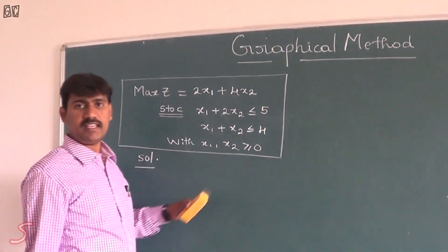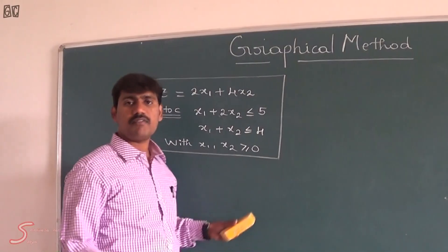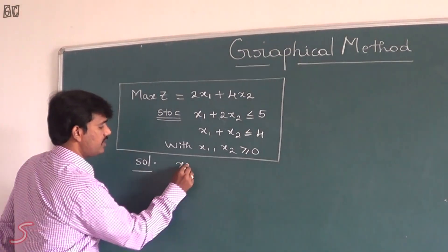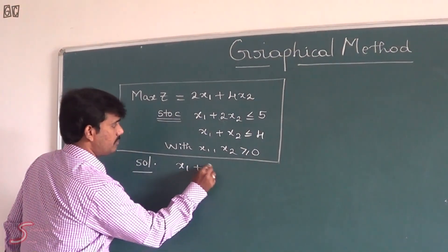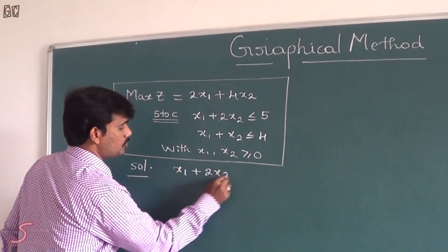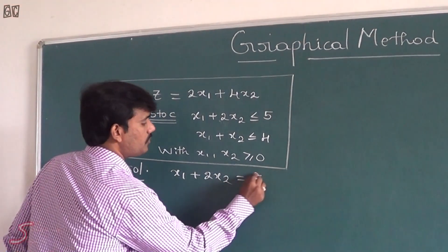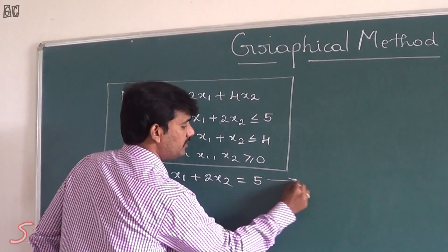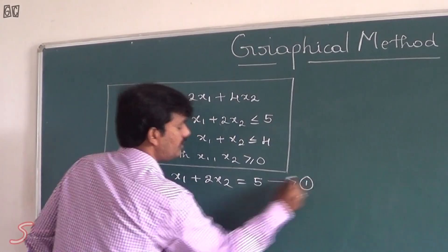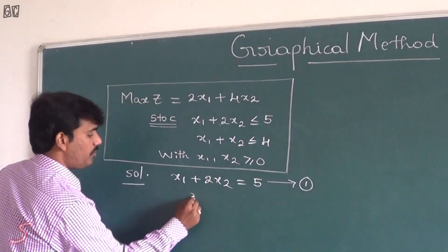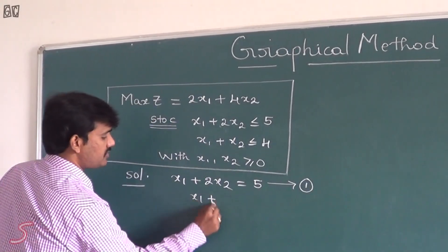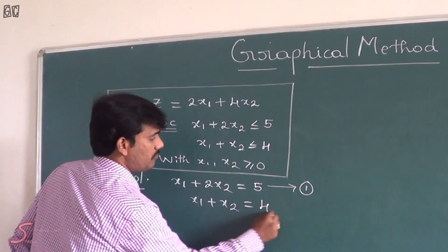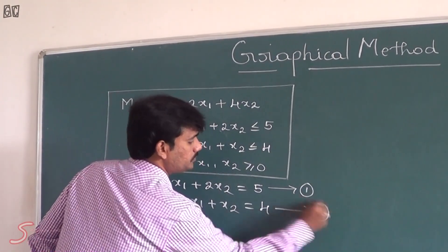First, we have to change the inequality constraints to equalities. So that is: x1 plus 2x2 equal to 5 — this is Equation 1. And we have one more equation: x1 plus x2 equal to 4 — this is Equation 2.